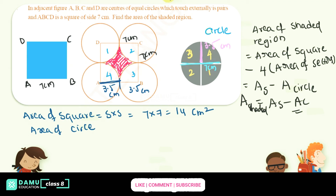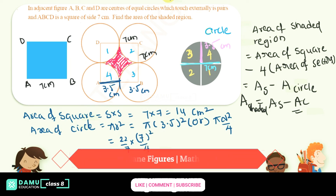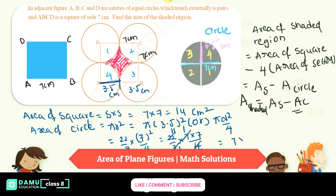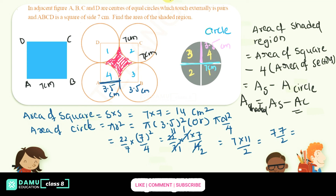Area of circle equals πr², substituting π into 3.5 squared. Or we can write it as πd²/4, which gives 22/7 into 7 squared by 4, equals 22/7 into 49/4. Cancelling 7s gives 22 into 7 by 4, equals 77/2, which is 38.5 centimeters squared.